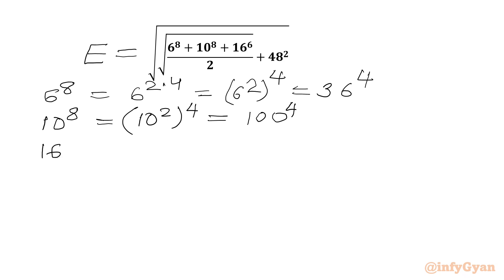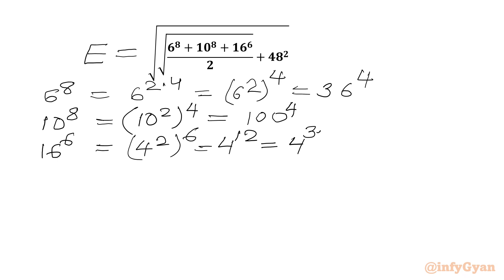Similarly, 16 power 6: since 4 squared is 16, we write 4 power 6 as 4 power 12, which we factor as 3 times 4. Using the exponent law this gives us 4 cubed whole power 4. 4 cubed is 64, so 64 whole power 4. So in place of 16 power 6 we will write 64 power 4.